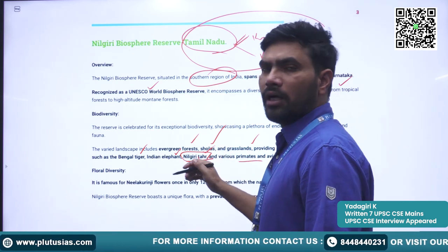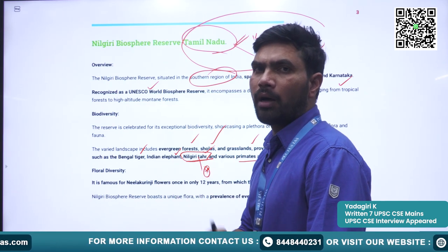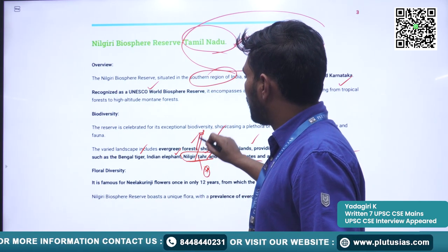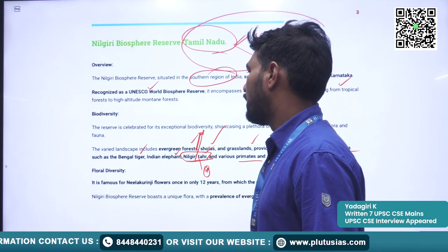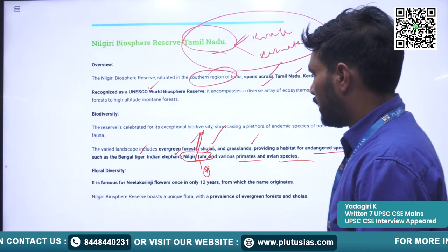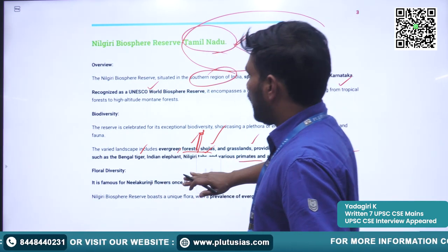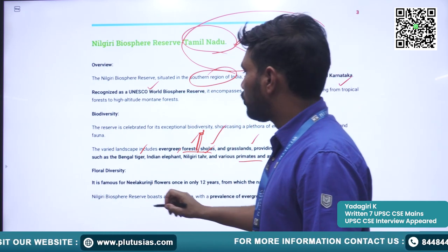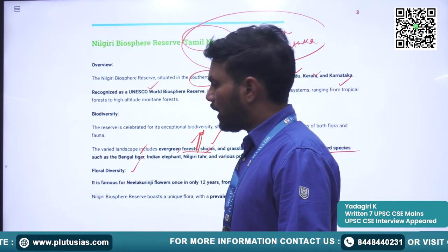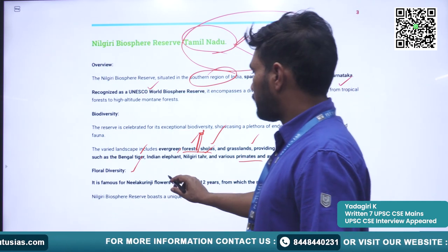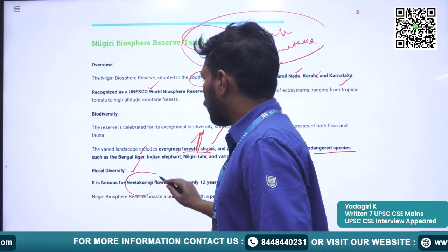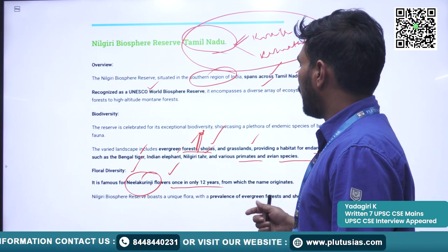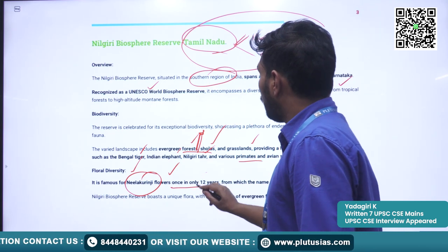When we discuss endangered species in upcoming classes, I will also discuss the Nilgiri tahr specifically. The Biosphere Reserve is also famous for its floral diversity — particularly the Nilakurinji, a flower which blooms only once in 12 years.